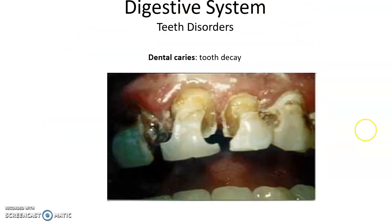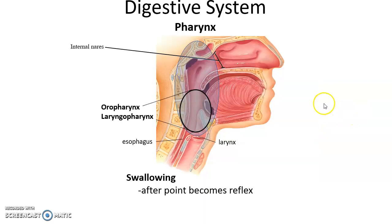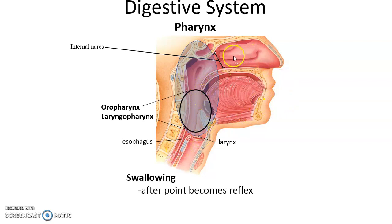Some disorders of the oral cavity include tooth decay, known as dental caries — cavities. Moving on to the pharynx: the pharynx is important for connecting the oral cavity to the esophagus. It also connects the nasal cavity to the larynx, so it is part of both the digestive system and the respiratory system.